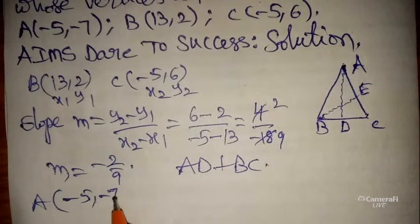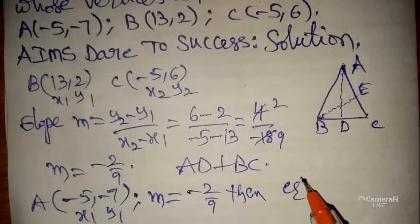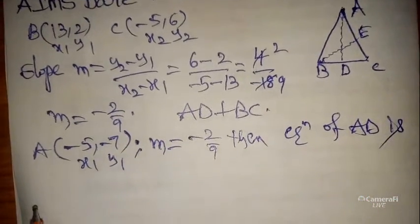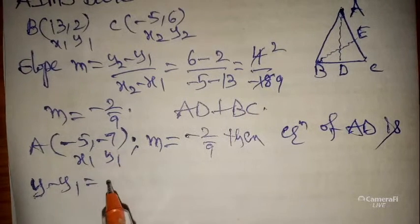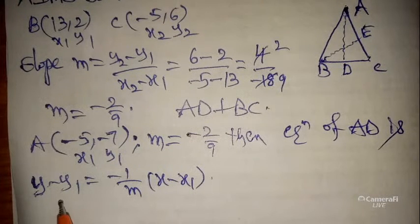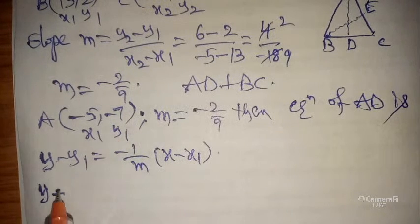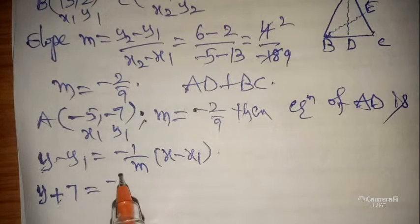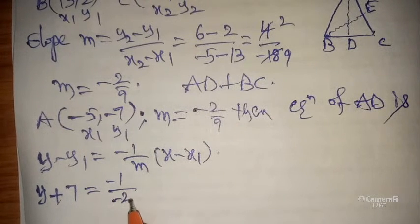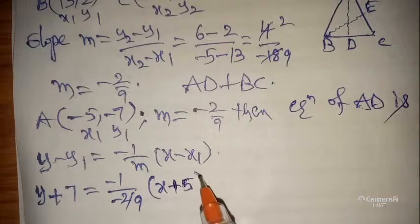What is point A? According to our question, point A is (-5, -7) — let it be (x1, y1). And m = -2/9. Then the equation of AD: since it is perpendicular, we use y - y1 = (-1/m)(x - x1). If it is not perpendicular, you use y - y1 = m(x - x1) — that is the parallel equation. So here: y - (-7) = (-1/(-2/9)) × (x - (-5)).